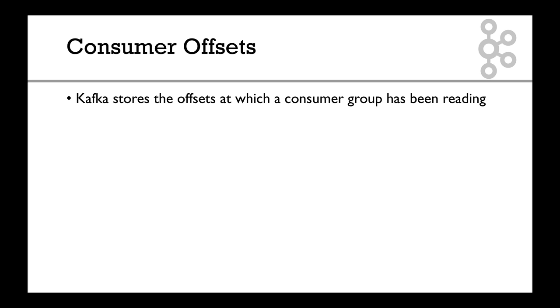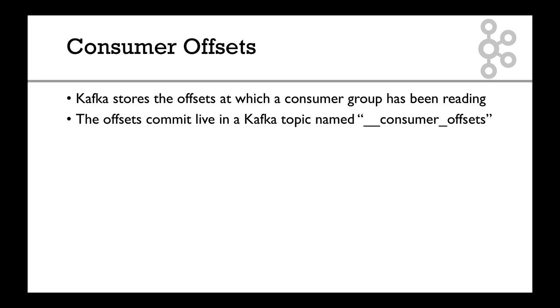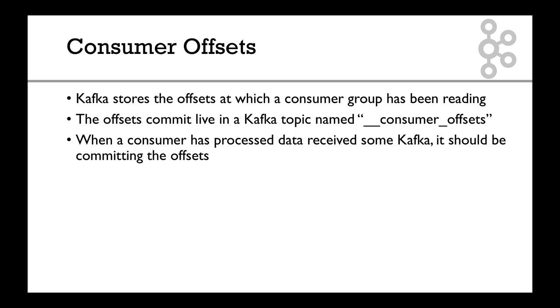You may ask: how do consumers know where to read from? The answer is Consumer Offsets. Remember, offsets are 0, 1, 2, 3, increasing for each partition. Kafka stores the offsets at which a consumer group has been reading — that's really important. That offset storage is actually stored in a Kafka topic named Consumer Offsets. When a consumer has been reading some data and processed it, it will commit those offsets.